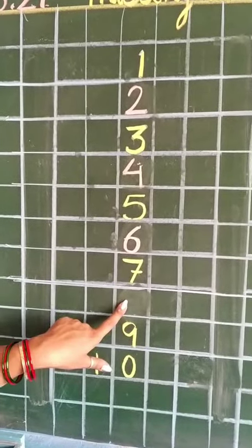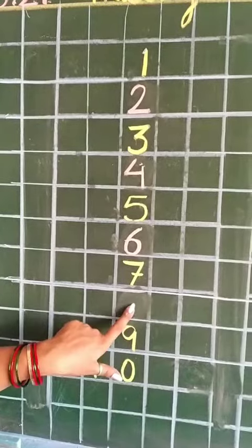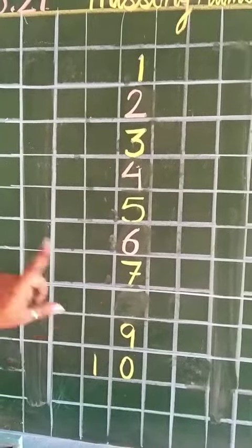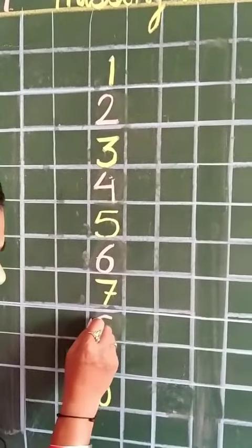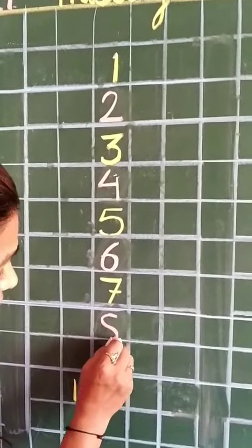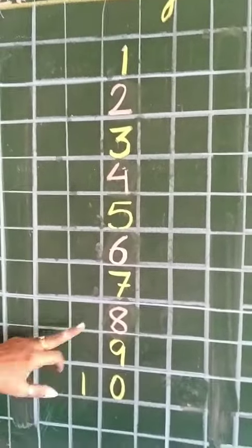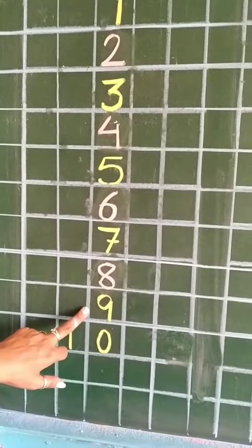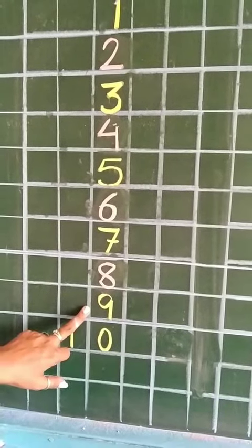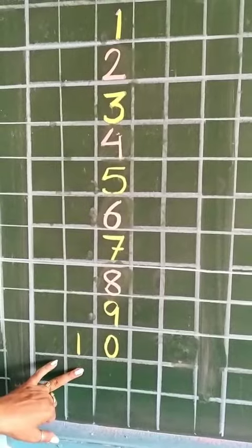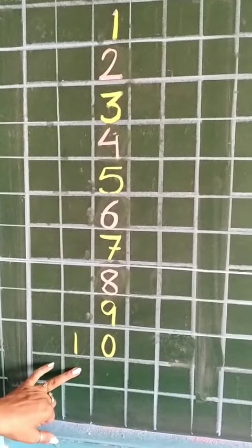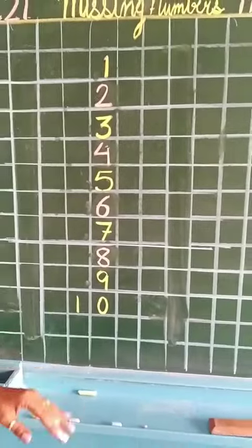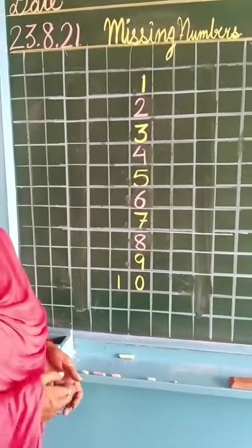What comes after 7? Oh, this box is empty. So tell me what comes after 7? 8. Yes, so we will write 8 here. What comes after 8? 9. Maine 9 likhha hua hai. And what comes after 9? 10. So 10 bhi likhha hua hai. Like this, you have to complete the sequence.